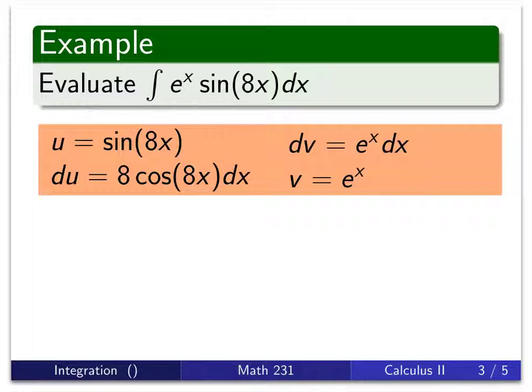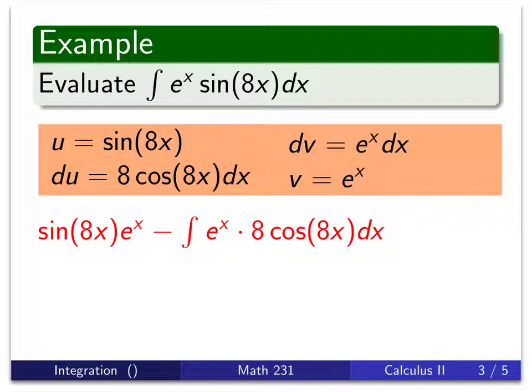So I do it again. I'm going to take u times v minus the integral of v times du. So here are all those pieces put together. We've got u times v minus the integral of v times du. But here we have that problem again.